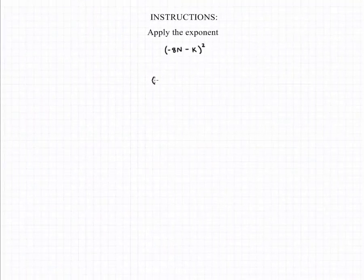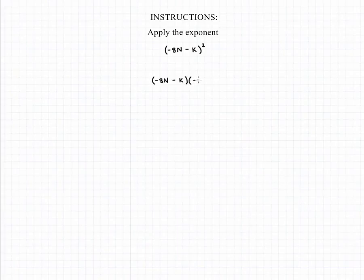To begin, we need to remember that negative 8n minus k squared is the same thing as negative 8n minus k multiplied by negative 8n minus k.